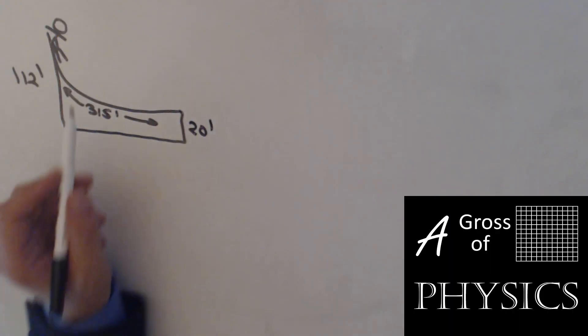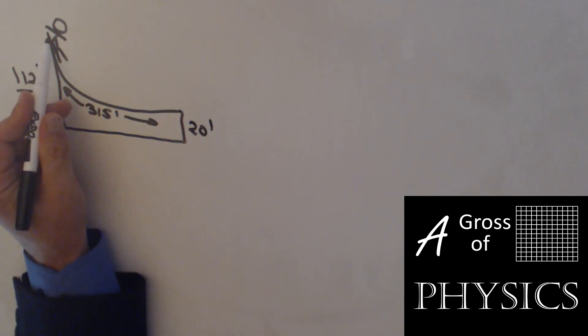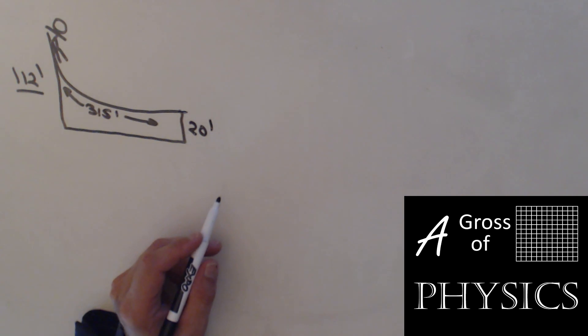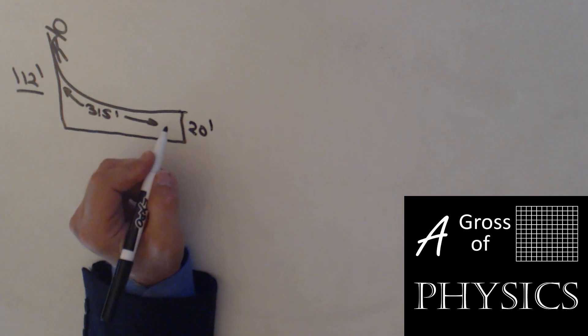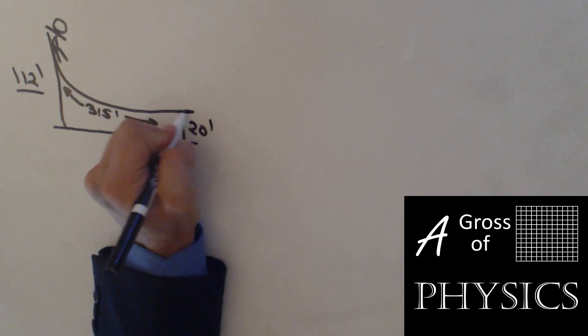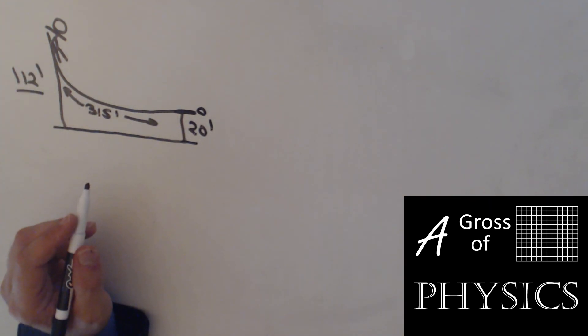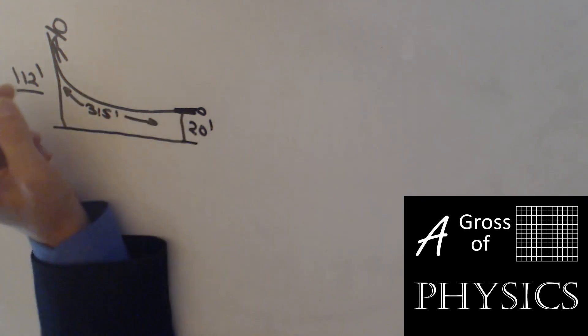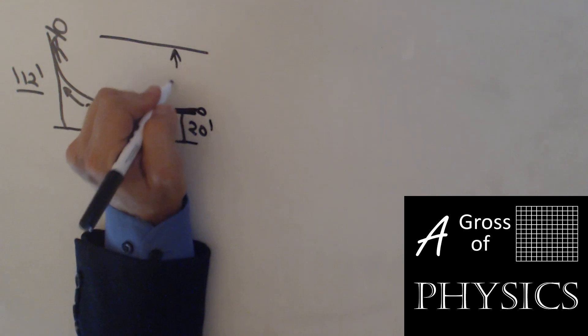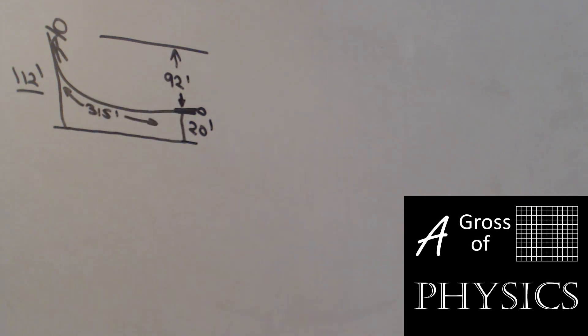This next problem involves a skier moving down a ski jump, and the ski jump itself is 112 feet high, and the launch area is 20 feet off the ground. When we're doing an energy problem, we need to define what the zero point is. I could use the final ground as the zero point, but since we're concerned about the person leaving the launch place, we're going to call this zero. So the difference in height is actually going to be 112 minus 20 feet, which is 92 feet.